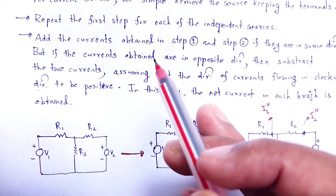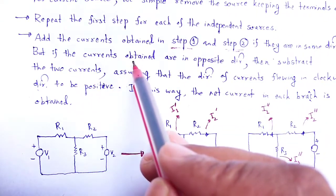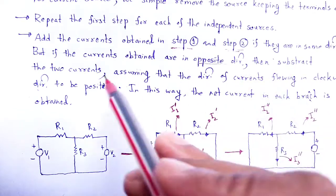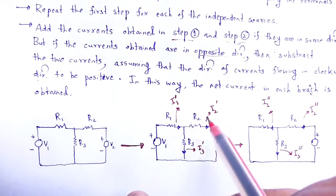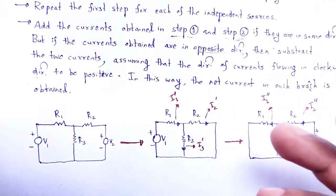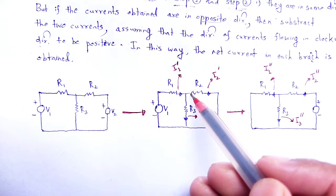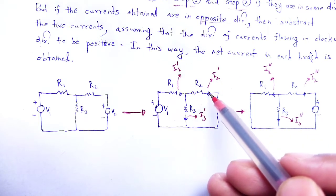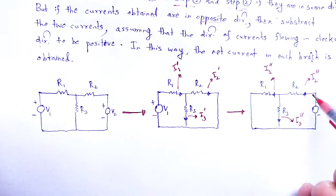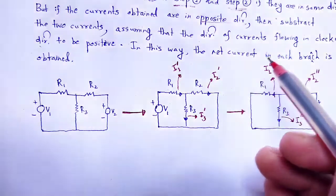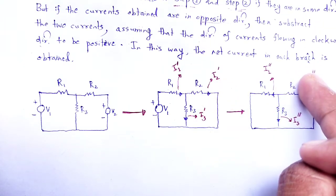Next step: add the currents obtained in step 1 and step 2. If they are in the same direction, add them; but if the currents are in opposite directions, subtract the two currents. Assuming that the direction of current flowing clockwise will be positive. In this way the net current in each branch is obtained. For branch R2, the current I2 dash and I2 double dash are in opposite directions, so the net current is I2 dash minus I2 double dash.